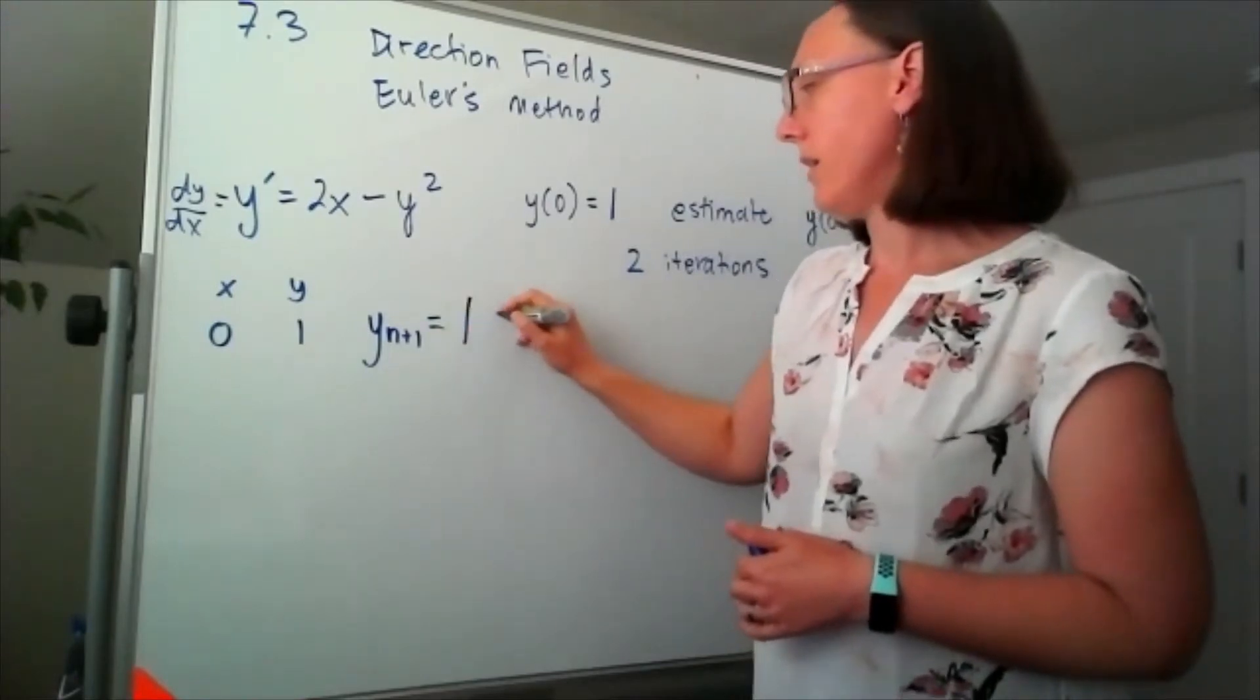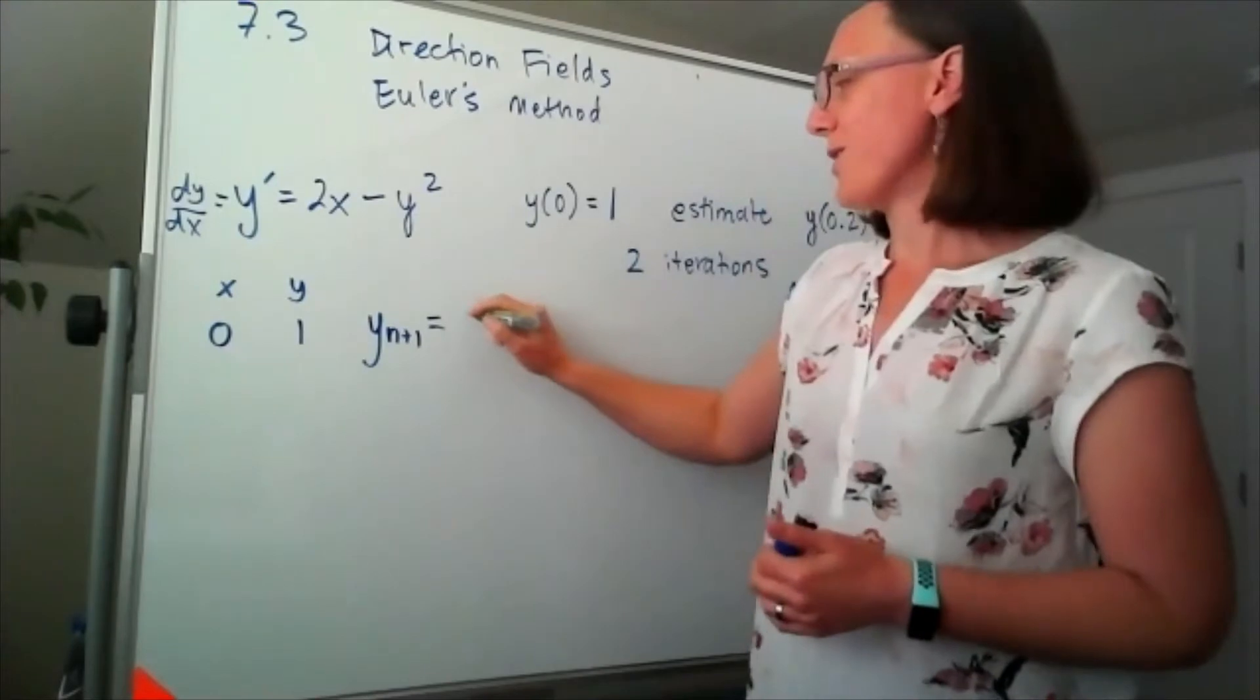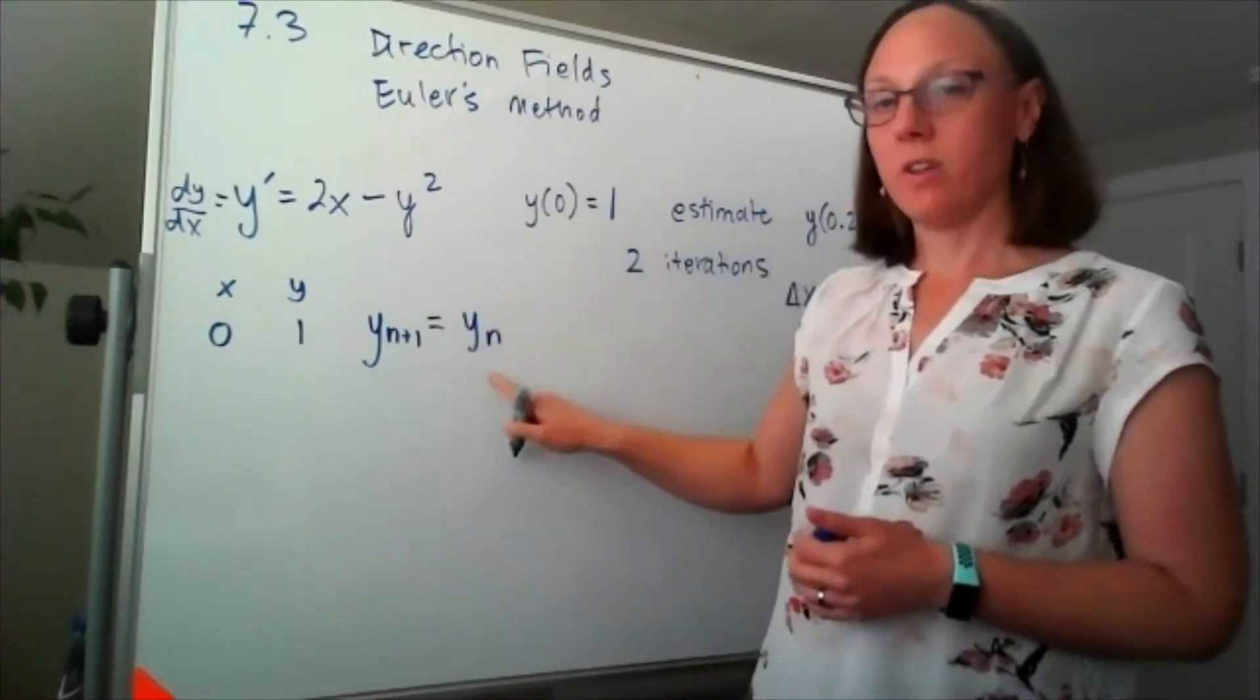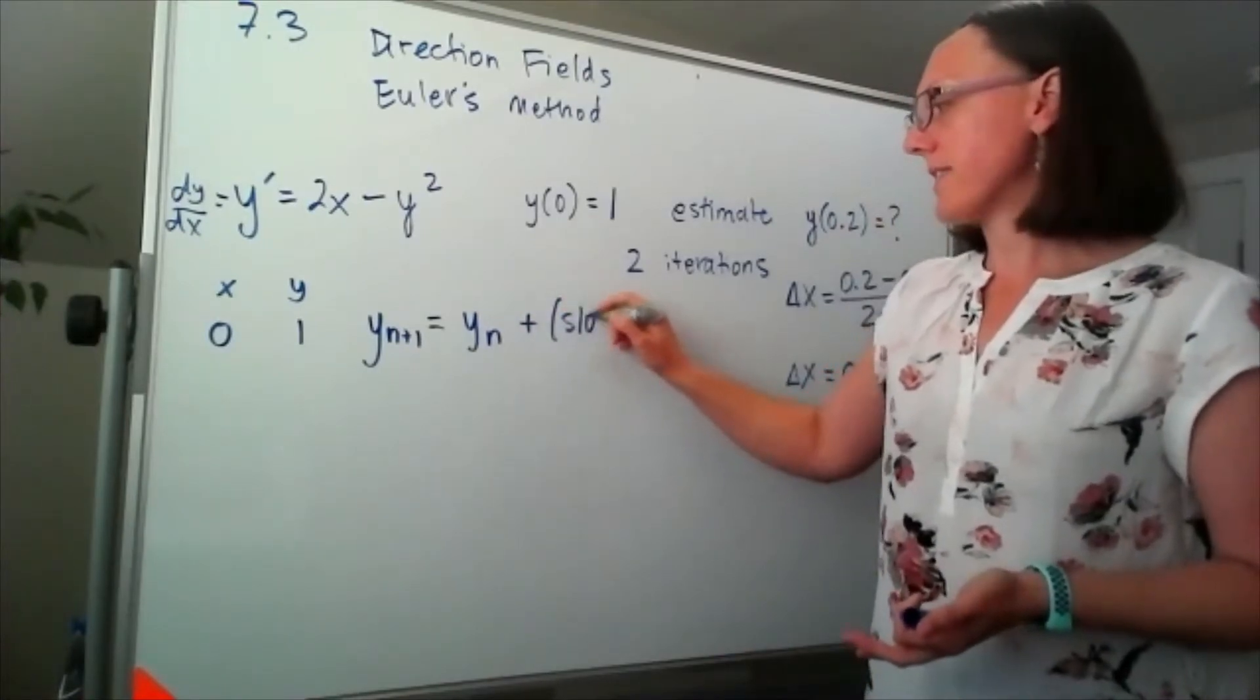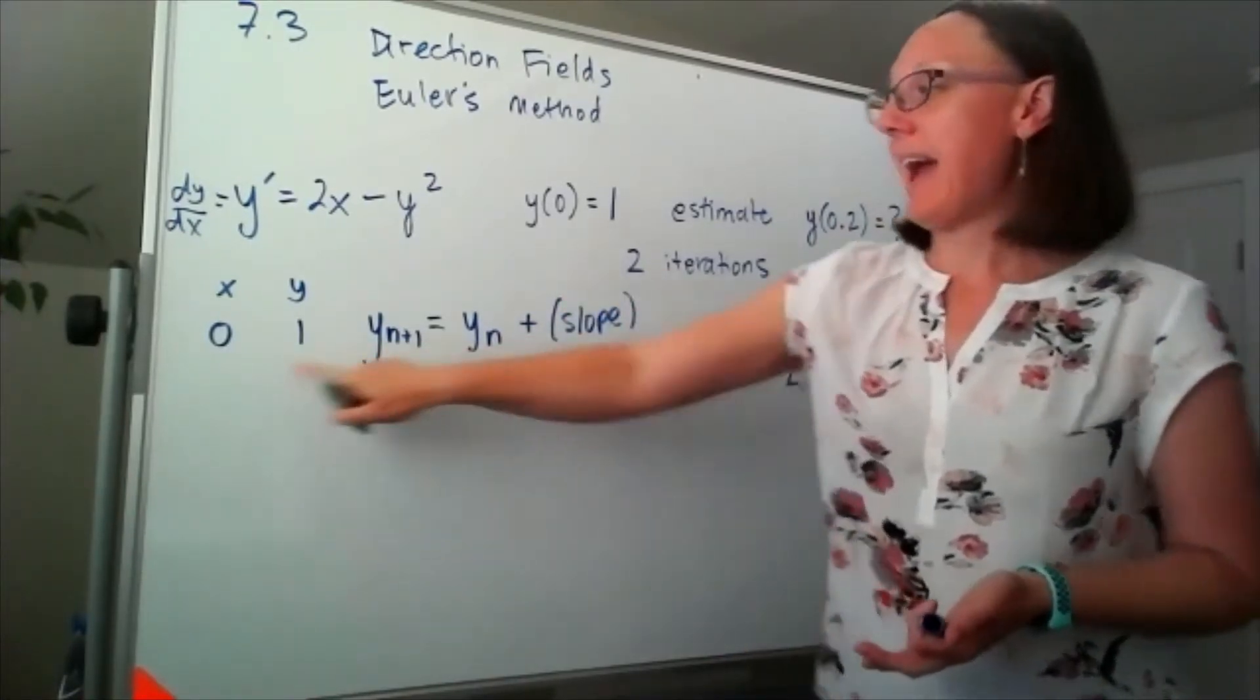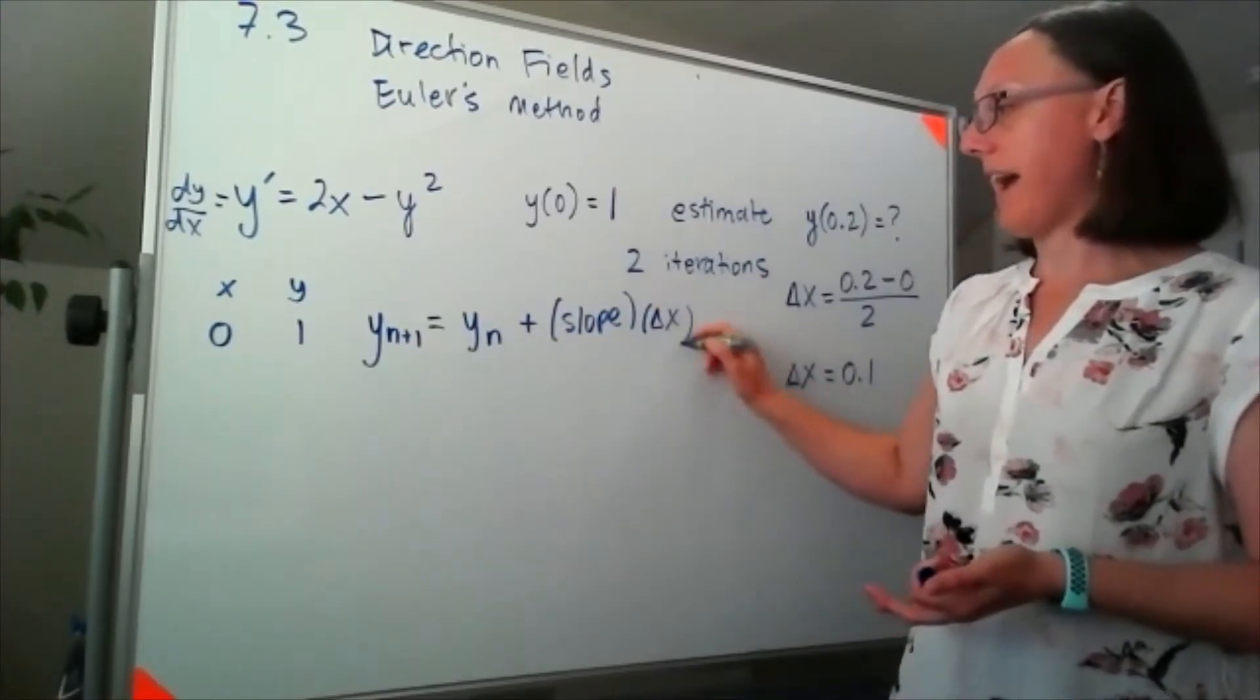I'll write the equation more generically. So I'm taking the y-value that I'm currently standing at plus my slope at the point I'm currently standing at times delta x.